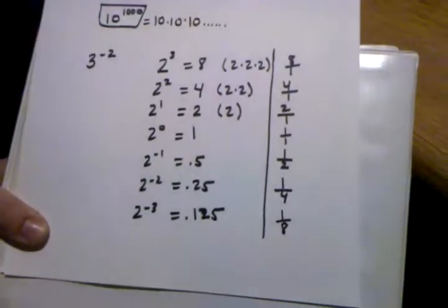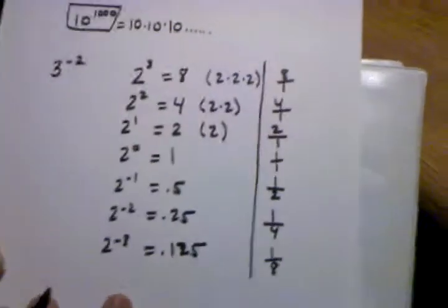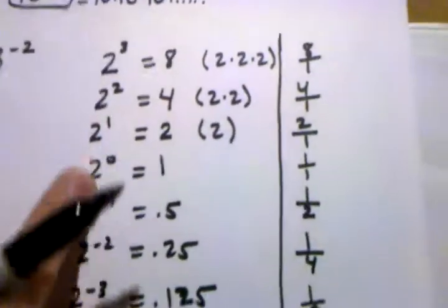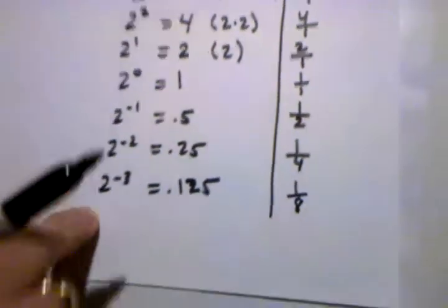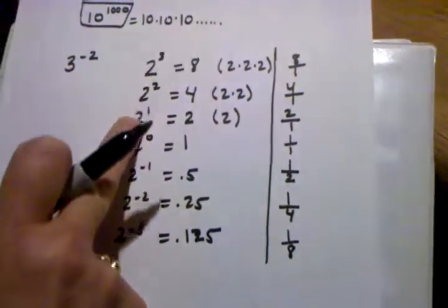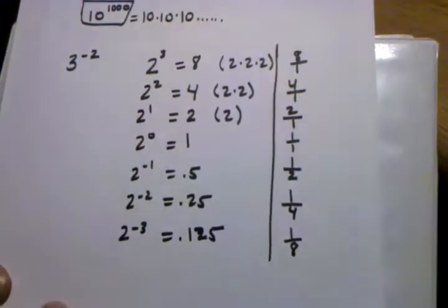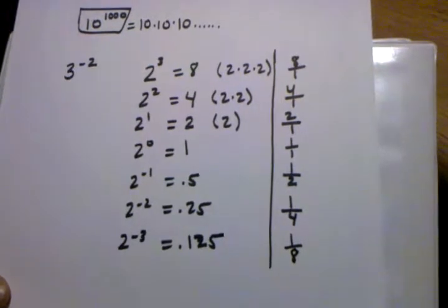Now that we've written all these numbers, these answers to these problems in fraction form, and we've put them in some kind of an order here by larger exponents going down to 0 and then into the negative numbers, what we see is a really nice pattern.